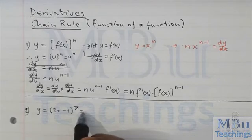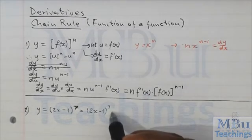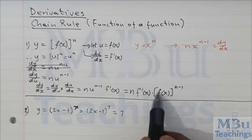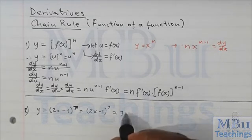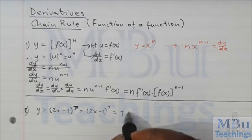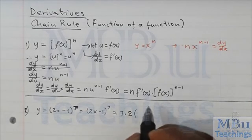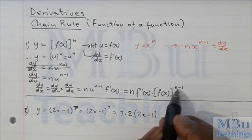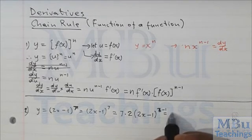Using the chain rule — let me rewrite it nicely. We have (2x − 1) to the power 7. So in the place of n you put 7. For f′(x), let's derive: f(x) is 2x − 1, so the derivative f′(x) equals 2. Now we open our bracket, retain f(x) which is (2x − 1), and change the exponent to 6 — that is 7 minus 1. So we end up with 14(2x − 1)^6.